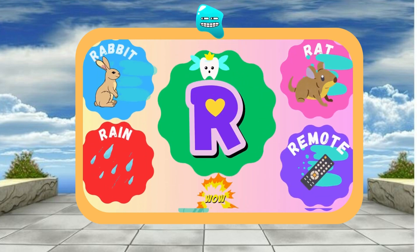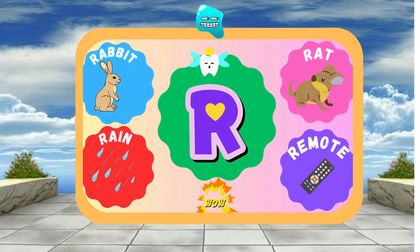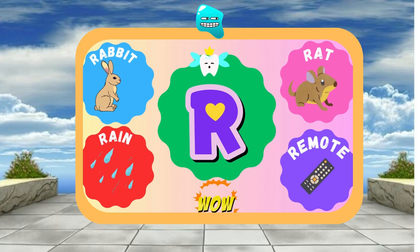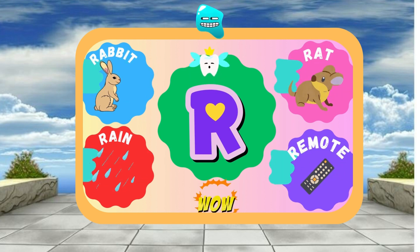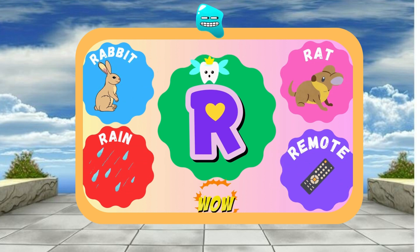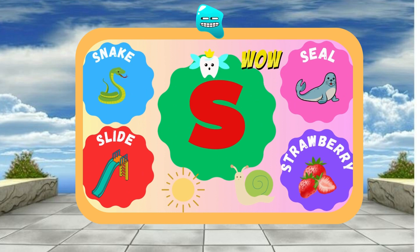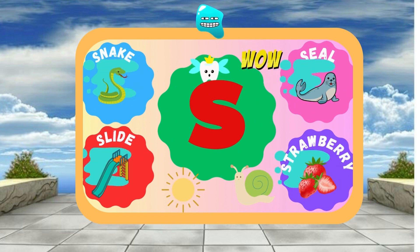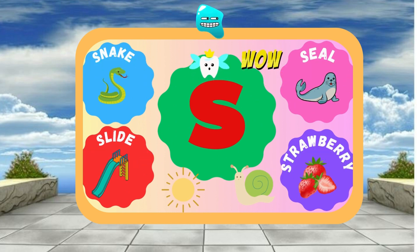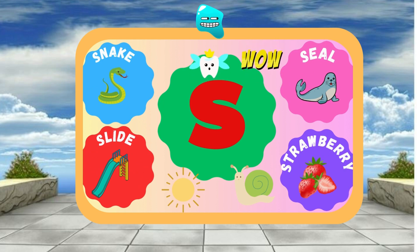R is for Rat — R, r, Rat. R is for Rabbit — R, r, Rabbit. S is for Sun — S, s, Sun. S is for Snail — S, s, Snail.